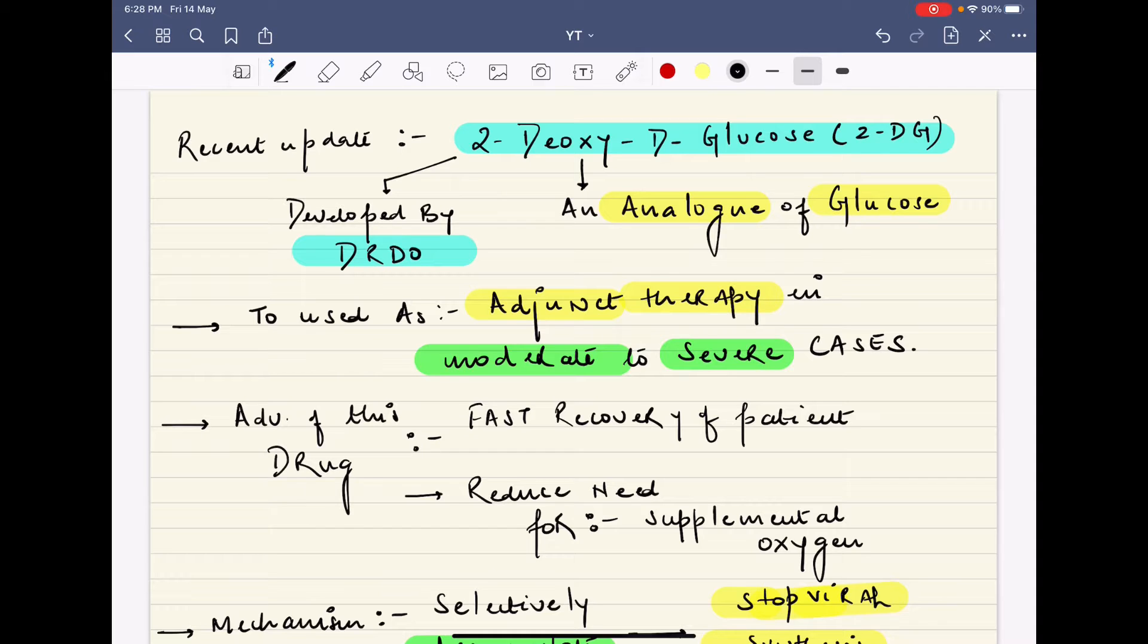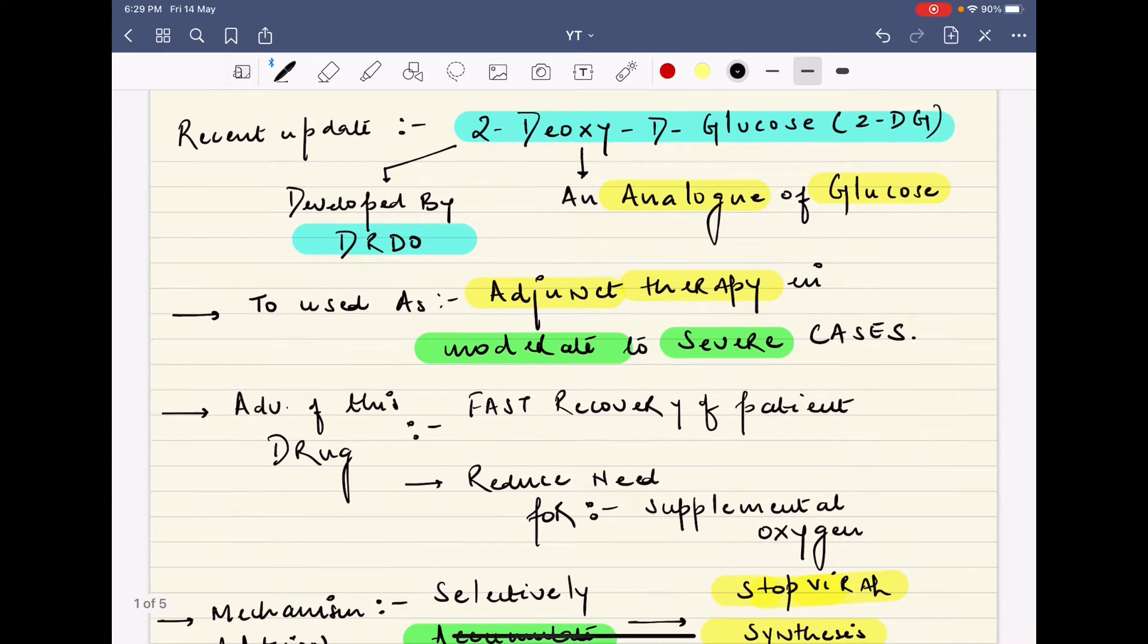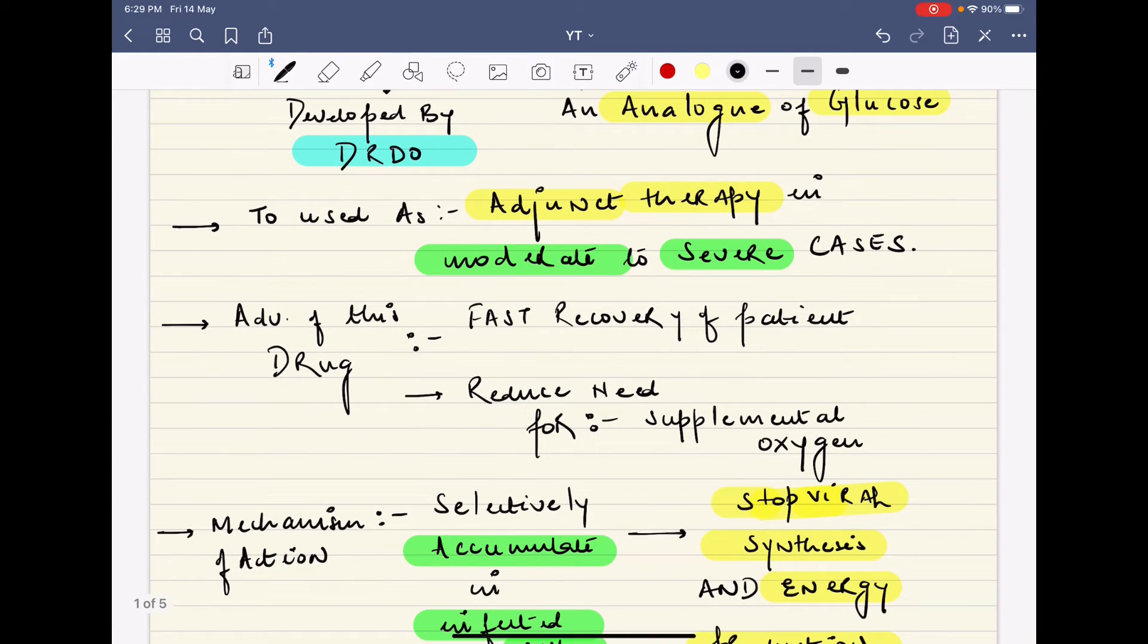The drug is 2-deoxy d-glucose, recently developed by DRDO. It is an analog of glucose used as adjunct therapy to treat moderate to severe cases of COVID-19 which are currently treated with some other kind of therapy.